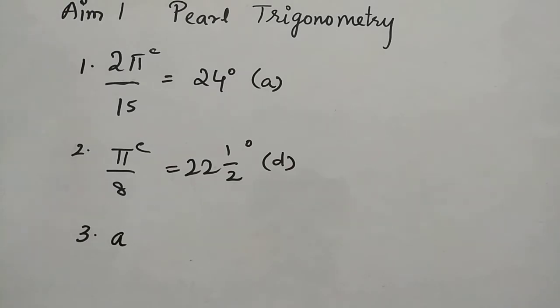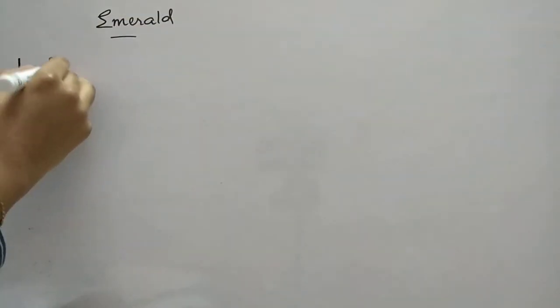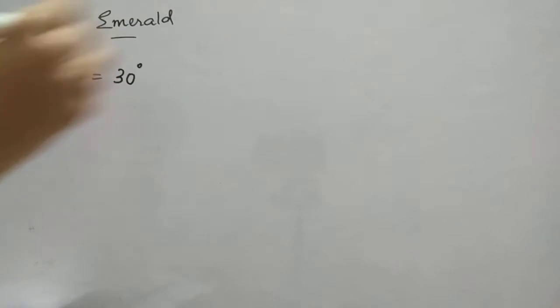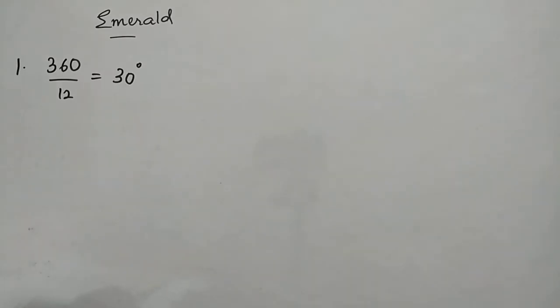Now we will see the emerald package. First question: the angle between any two consecutive digits of a clock. So we know that it is 360 degrees full rotation. 360 by 12, 12 hours. So when you cancel, it is going to be 30. So between any two consecutive digits in a clock, there will be 30 degree space.